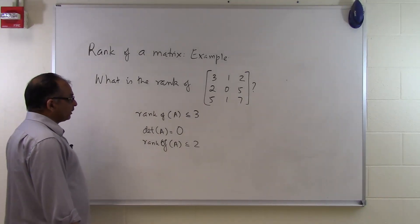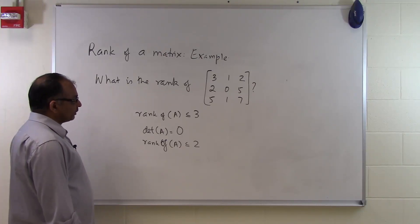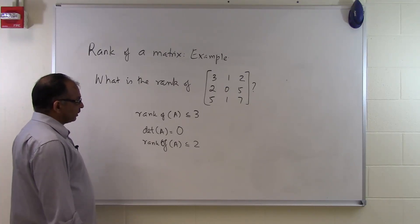We now have to look at all the 2x2 submatrices of this 3x3 matrix which is given to us. And the first one which gives us non-zero we can stop. But if it continues to give us determinant to be 0 then we cannot do so.